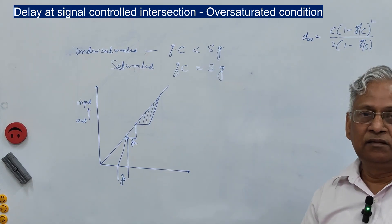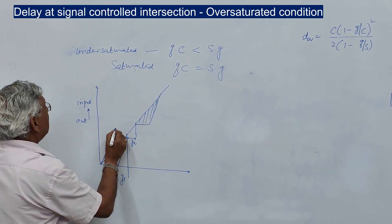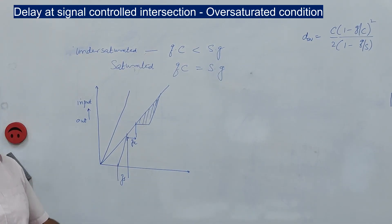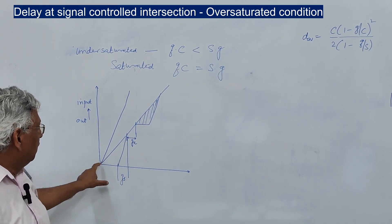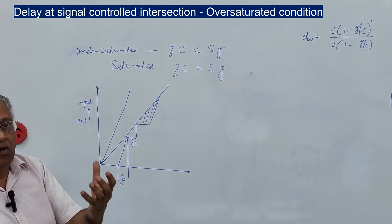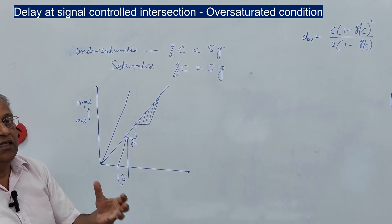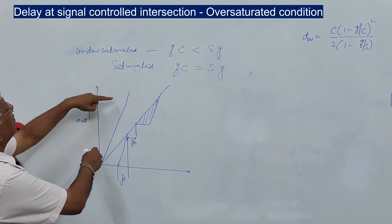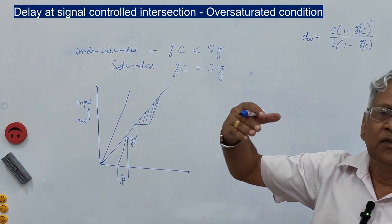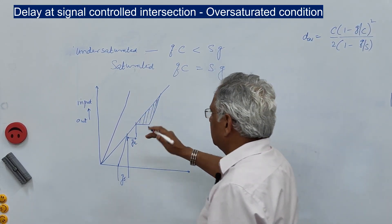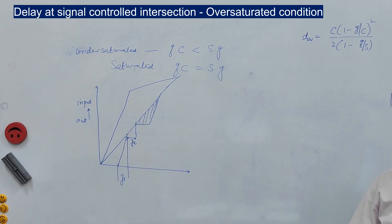During peak periods, the flow fluctuates — suddenly a flow much higher than Q occurs. In this case, the departure rate remains constant because the intersection capacity is constant, but the input flow suddenly increases. This is called failure of the individual cycle: the signal has not failed, but the individual cycle has failed due to the sudden increase in flow input. This condition cannot continue indefinitely; otherwise the queue becomes infinite. After perhaps 8–12 minutes of peak period, the flow reduces again — this is what we call over-saturation at the signal.